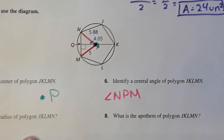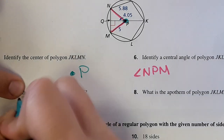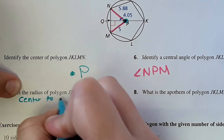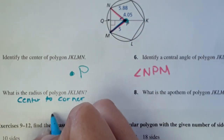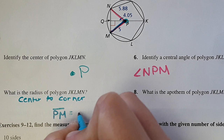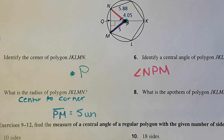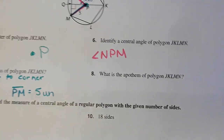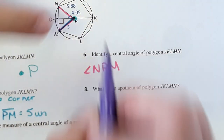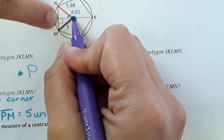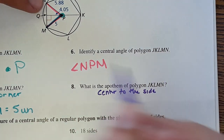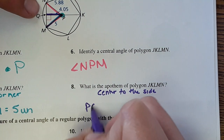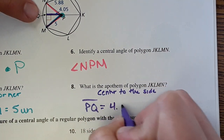Next it wants the radius of the polygon. The radius goes from the center to a corner. We can see that PM is a radius — PM is 5 units. Then this is a new word: the word apothem. The apothem is the distance from the center to the side — center to the side of the polygon. In this case it is PQ, which is the apothem at 4.05 units.